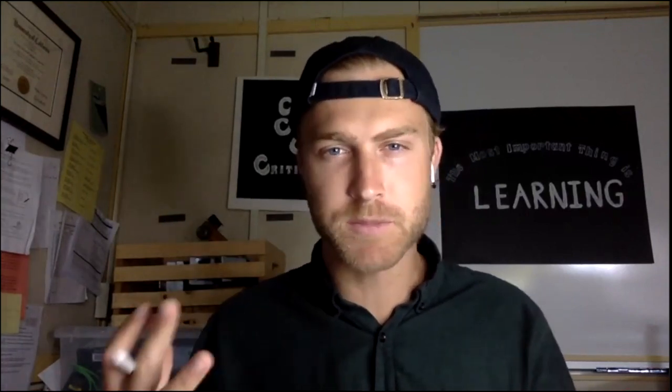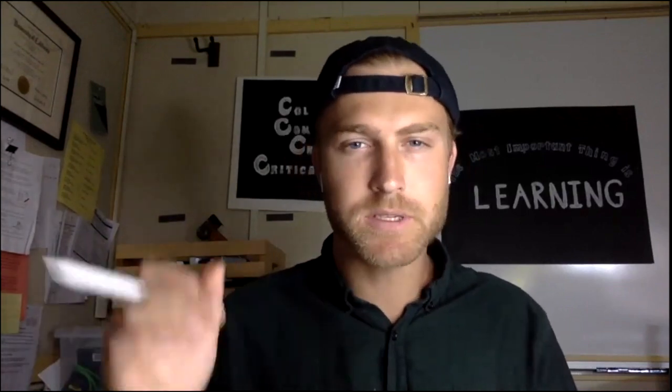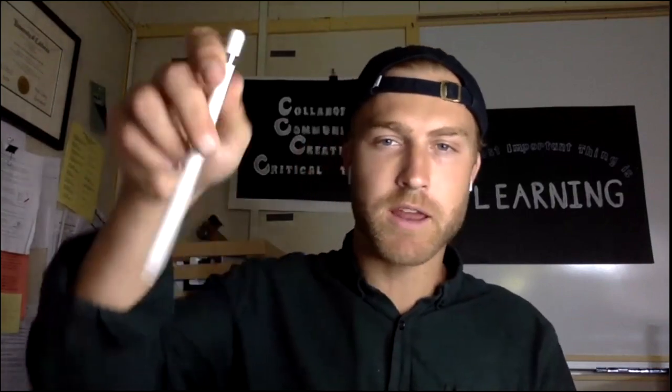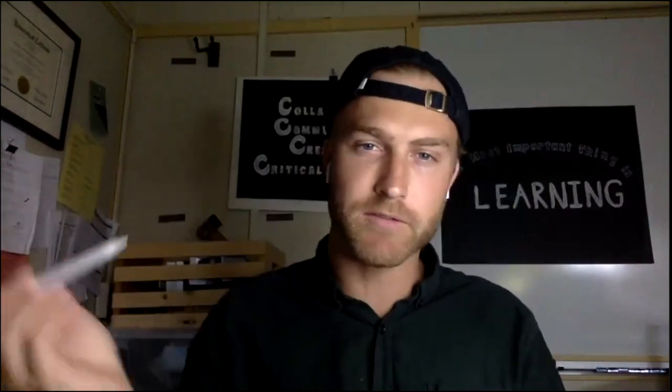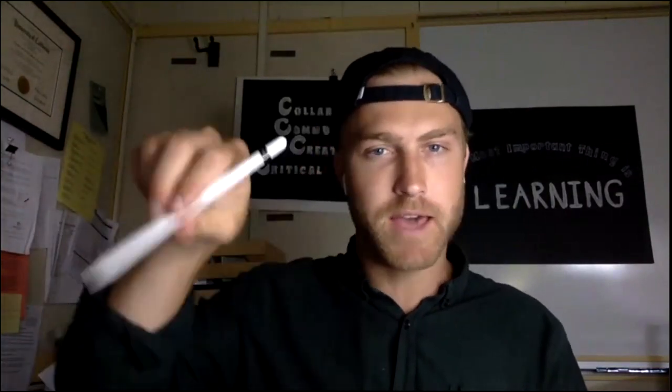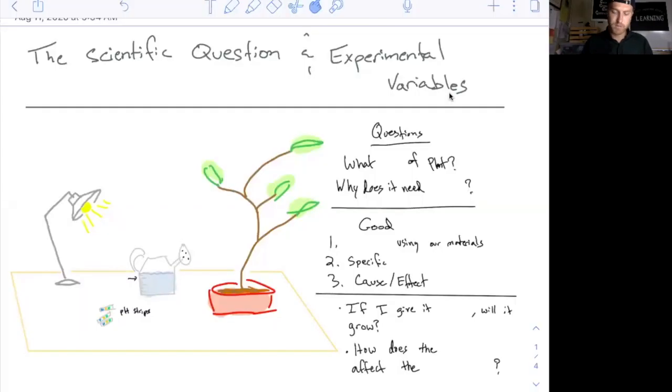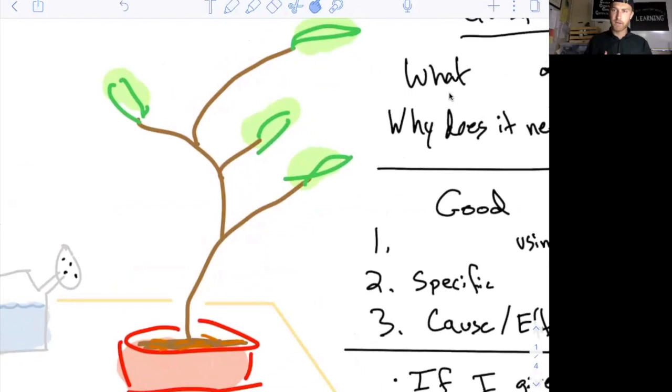All right class, we're going to learn our first learning objective, and this learning objective is all about asking a scientific question and coming up with an experiment to test that scientific question. We always start with a phenomenon — just something that you want to learn more about, something that you want to explore. In this video we're going to use a plant growing as our phenomenon, and when you look at it you start to think: what are some questions I can ask about it?